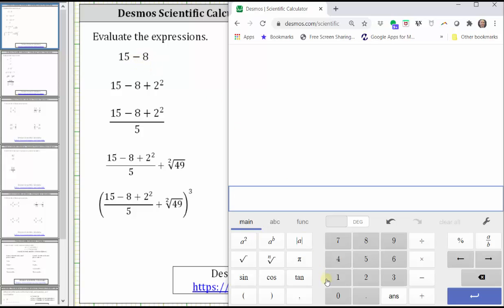To begin, we have 15 minus 8, which of course is equal to 7.